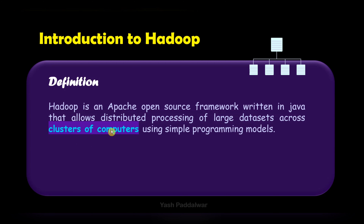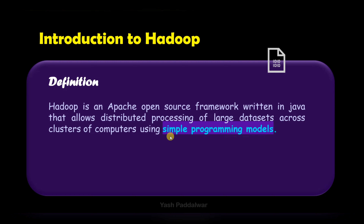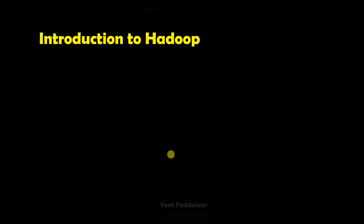The next part is across different clusters of computers. This processing takes place across different computers, which are divided into different clusters. These clusters collectively process the data using simple programming models. There will be some algorithms followed for processing this distributed data, and those algorithms are these simple programming models. So Hadoop is an Apache open source framework written in Java that follows distributed processing of larger datasets using simple programming models.